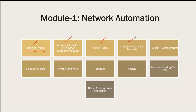Then we'll move forward into data serialization and templates. We are going to cover JSON, YAML, XML, and Jinja2 templates and how to integrate them with Python. For example, if I want to configure a routing protocol — OSPF, ISIS, BGP — or create VLANs, how can we create a template of the configuration and reuse it again and again?